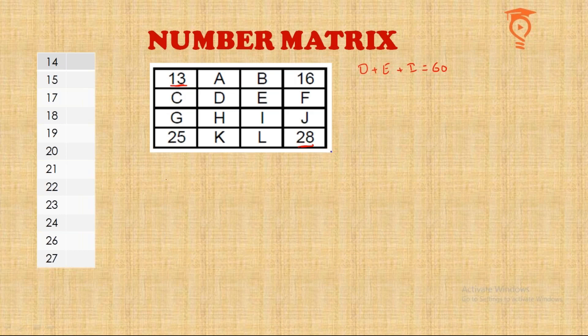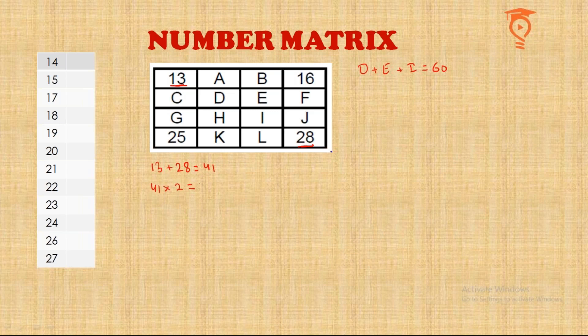When the numbers are consecutive, they form an AP. A property of AP is that if you add the smallest and largest numbers, you get the same sum for each pair: smallest plus largest, second smallest plus second largest, and so on. All these pairs give the same sum. Since there are groups of four numbers each supposed to give the same sum, a pair gives a sum of 41 here, so the sum of four numbers is going to be 82.